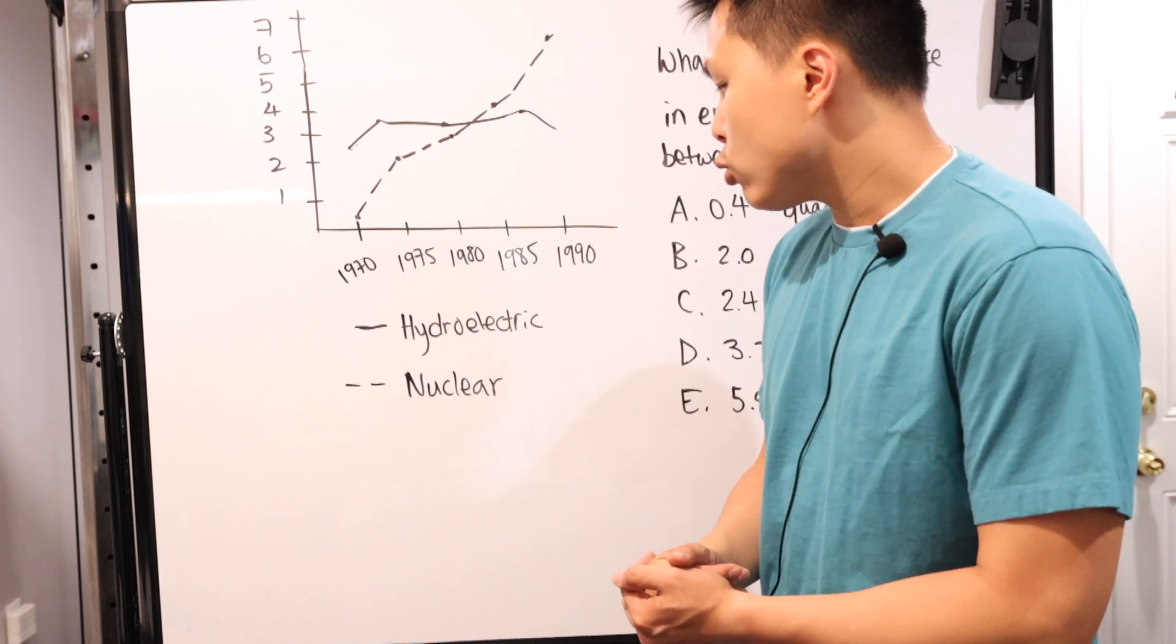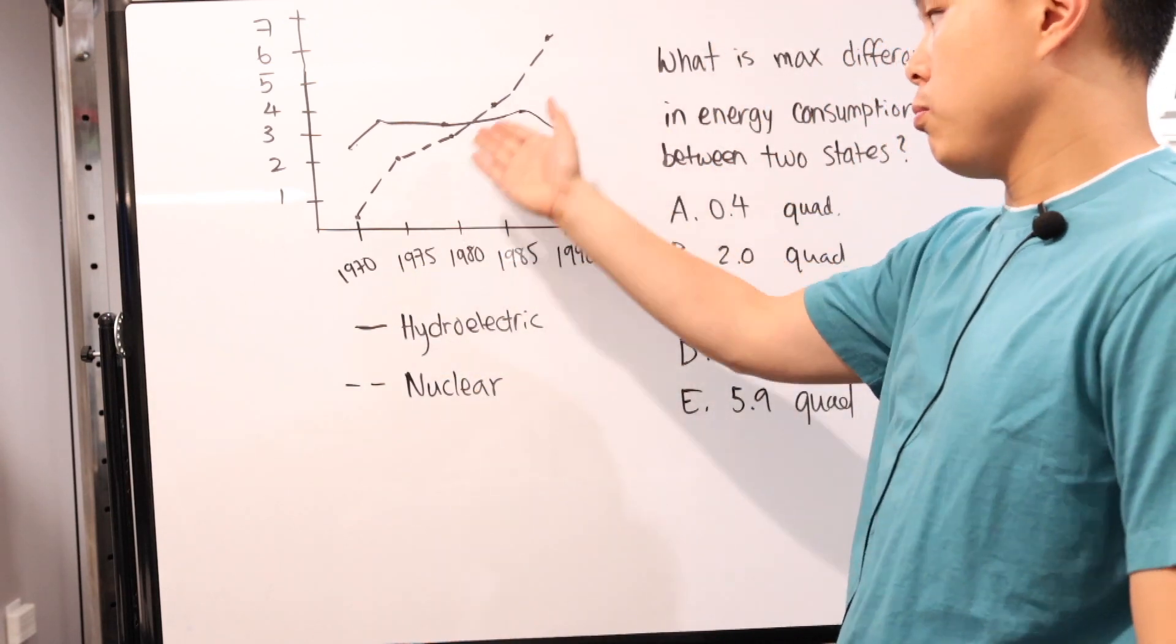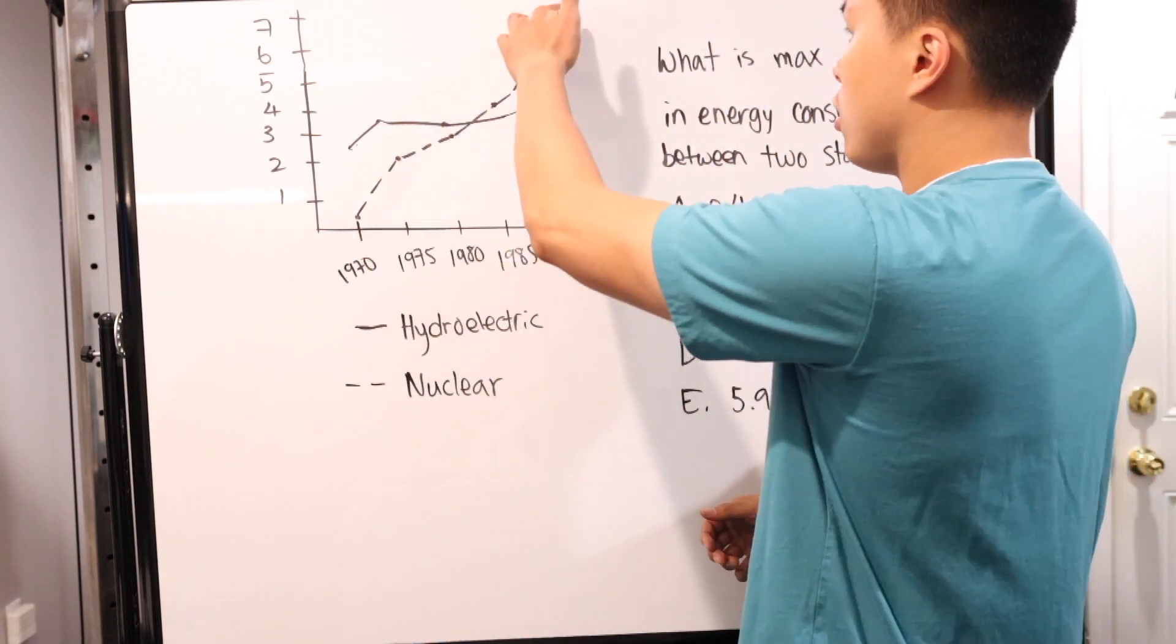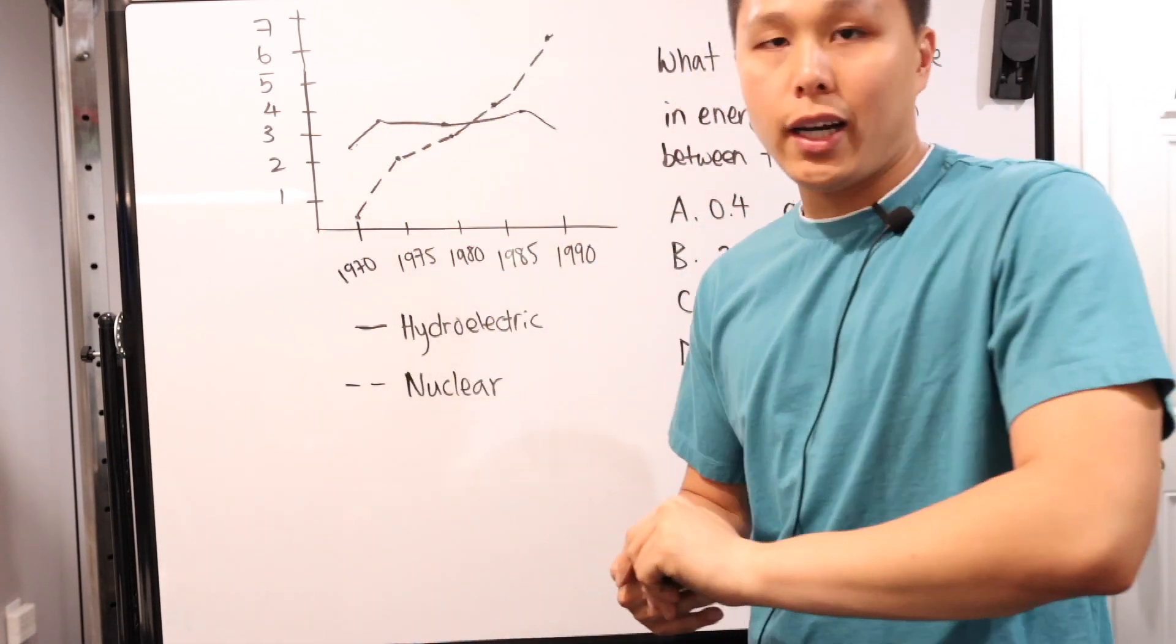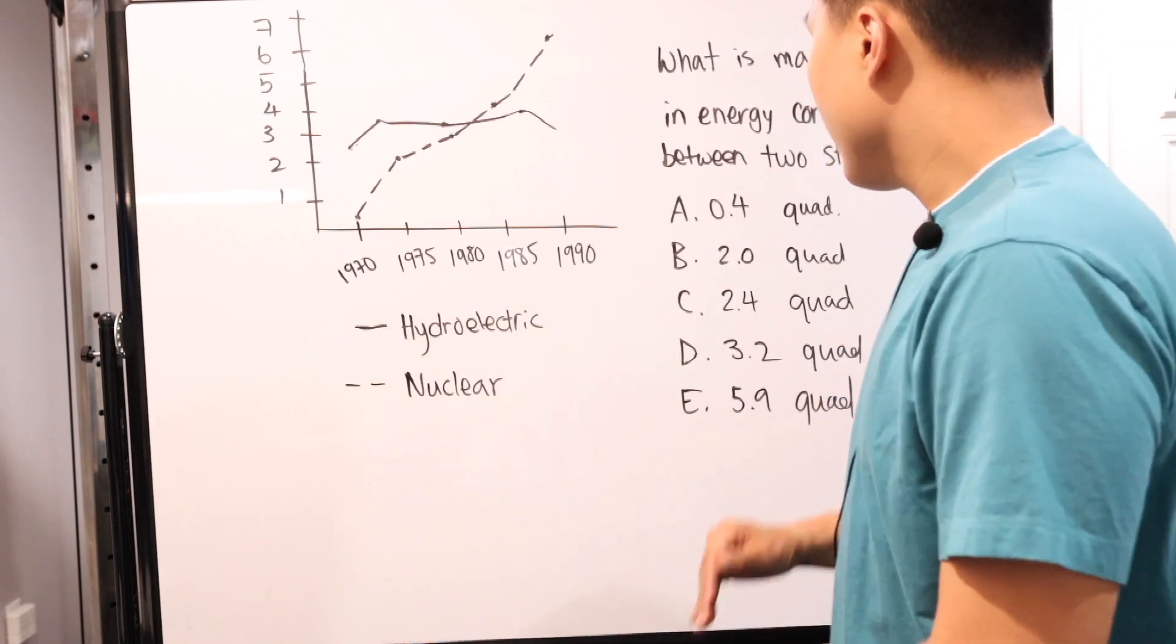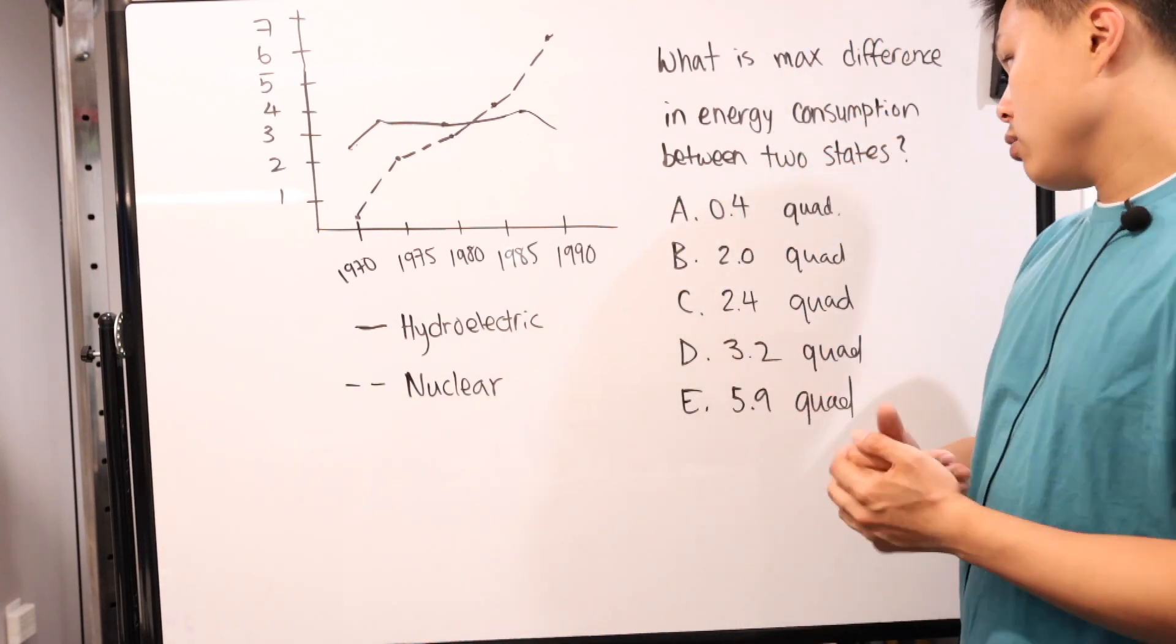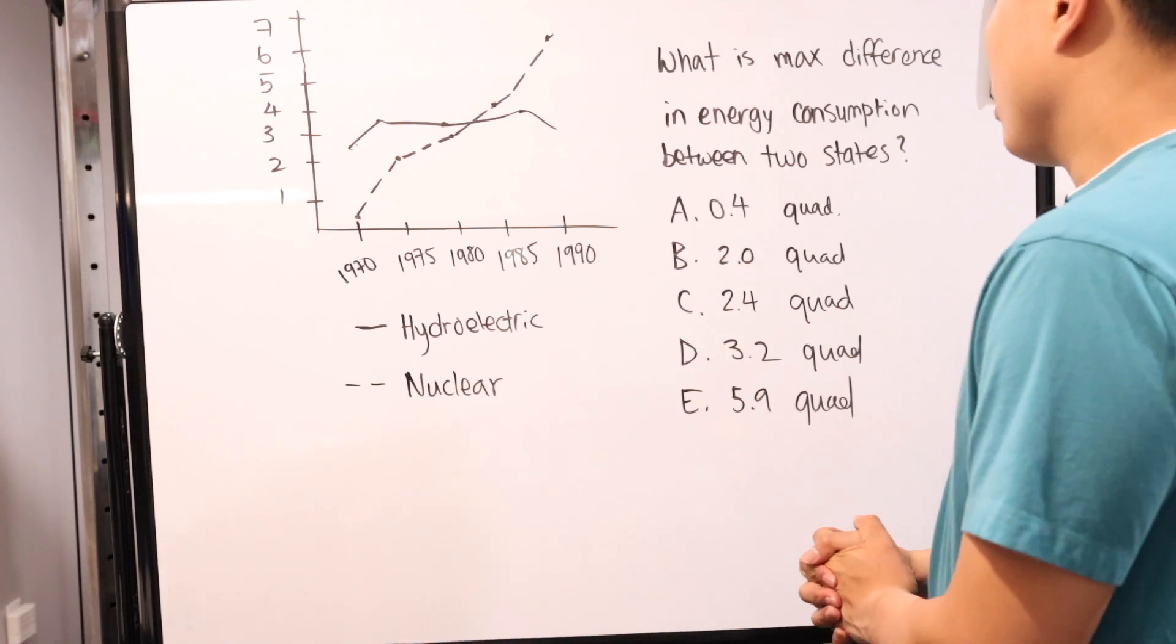The question is asking something fairly simple. It's just whether you guys comprehend and can get the information from the graph. What is the difference or max difference in energy consumption between the two states? Two states are the hydroelectric and nuclear. The dotted line, the poorly drawn dotted line right here, starting here all the way here, is your nuclear, and then your single or solid lines are your hydroelectric.